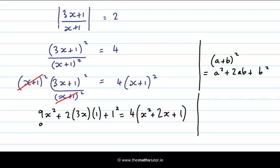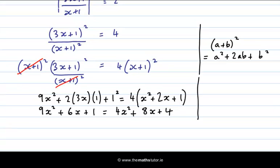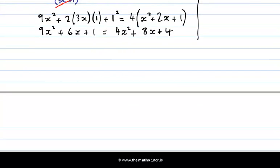Now, tidying up the left hand side, we get 9x squared plus 6x plus 1 is equal to 4x squared plus 8x plus 4. And as you see, we have a quadratic here. I just need to bring everything to one side and solve.